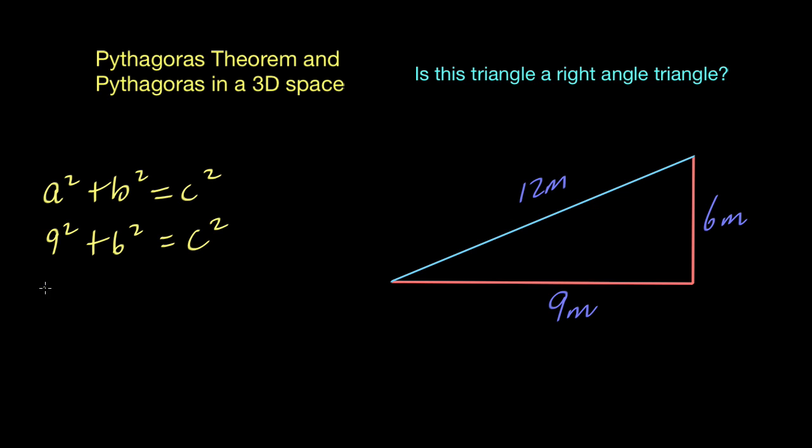So 9 squared, we know that that's going to give us 81 plus 36 for 6 squared equals c squared. Now 81 plus 36 is going to give us 117 and that's equal to c squared.